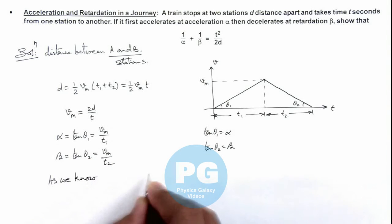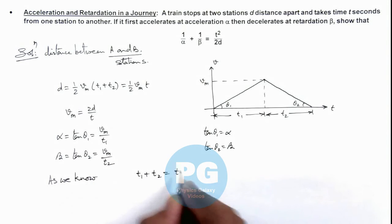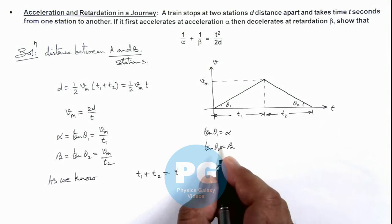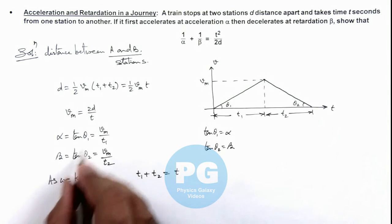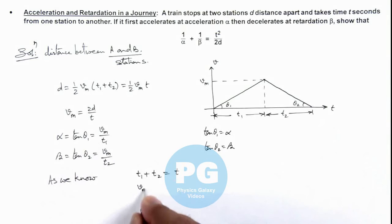We know the total time is t₁ plus t₂, which is the total time of this motion. We can write t₁ as vₘ/α, plus t₂ as vₘ/β, which equals time t.